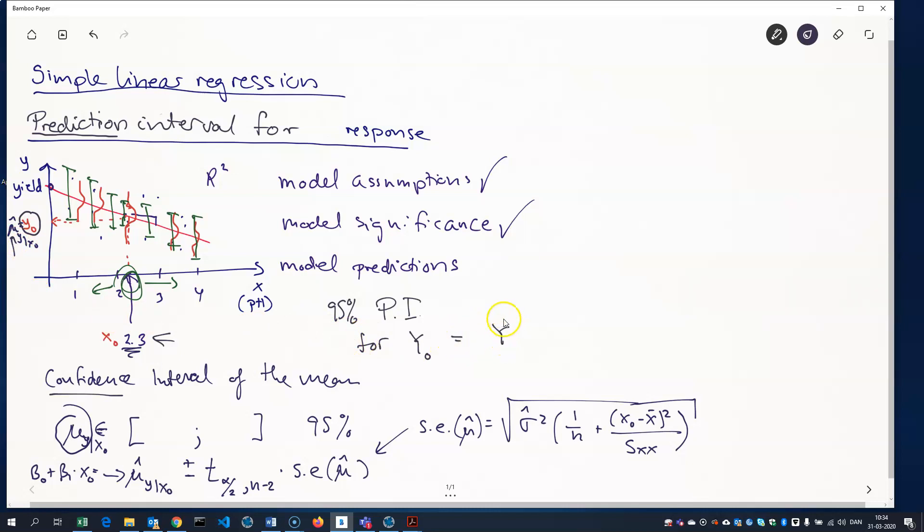And the center of that interval is the model prediction. So we'll just call that Y0 hat. And that's this value here. So it's computed in the exact same way as the mean. So beta0 plus beta1 times x0. And then we add and subtract some variation here.